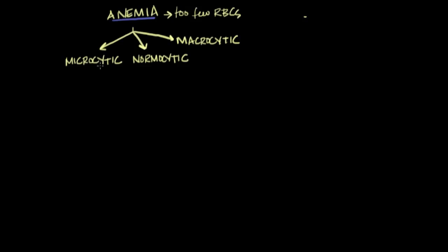In microcytic anemia, you have micro — small — cytic cells, so you have small red blood cells. A normal red blood cell is anywhere between 80 to 100 micrometers cubed. So in microcytic anemia, you end up with red blood cells that are less than 80 micrometers cubed.